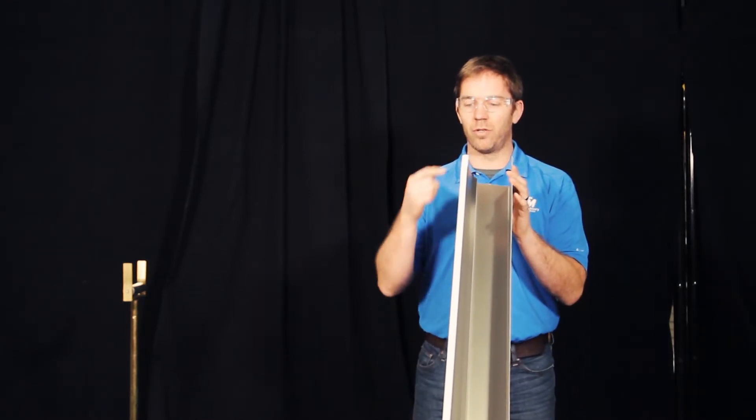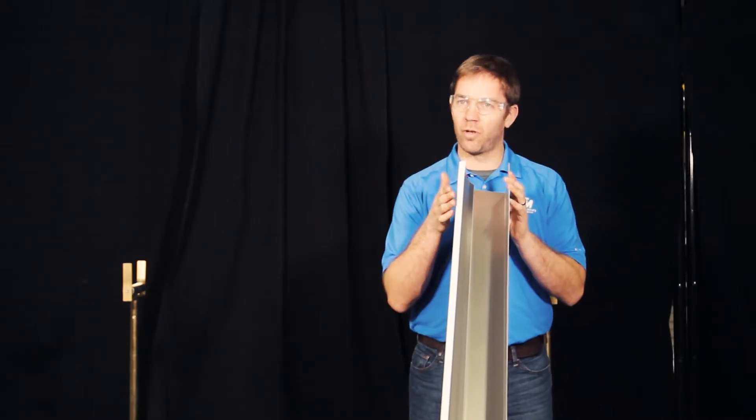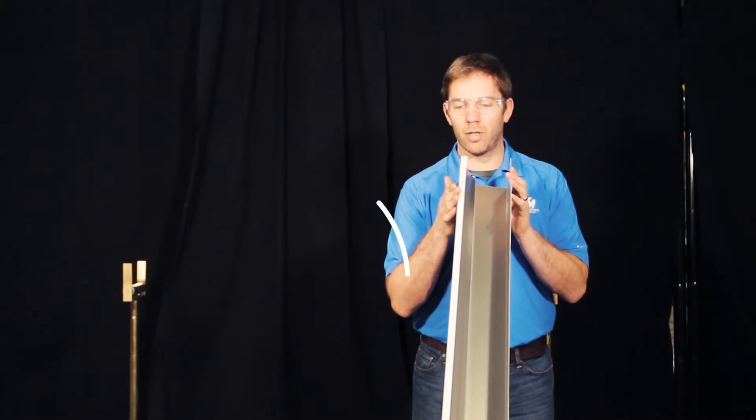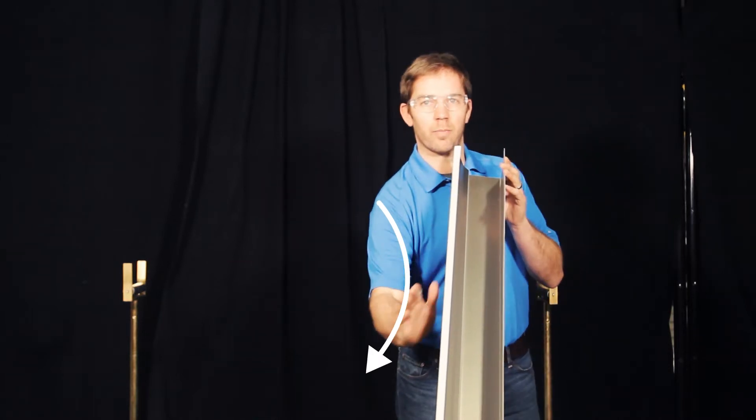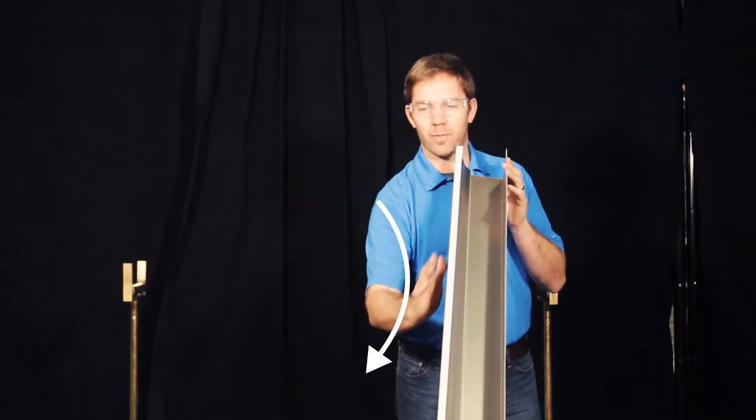First thing you want to do is sight down the top of the gutter here to see if it's nice and straight. So you just look down. What you're looking for is what's called away from the house and that is when the gutter kind of bows away from the house.